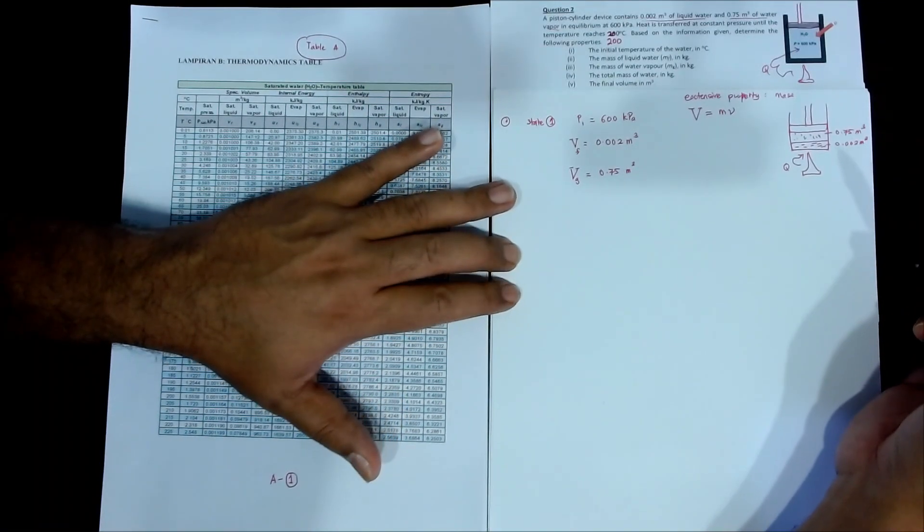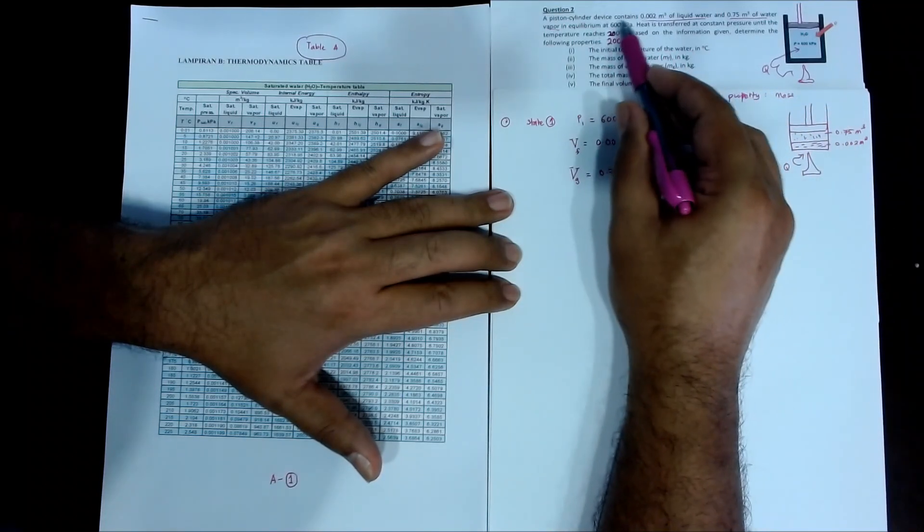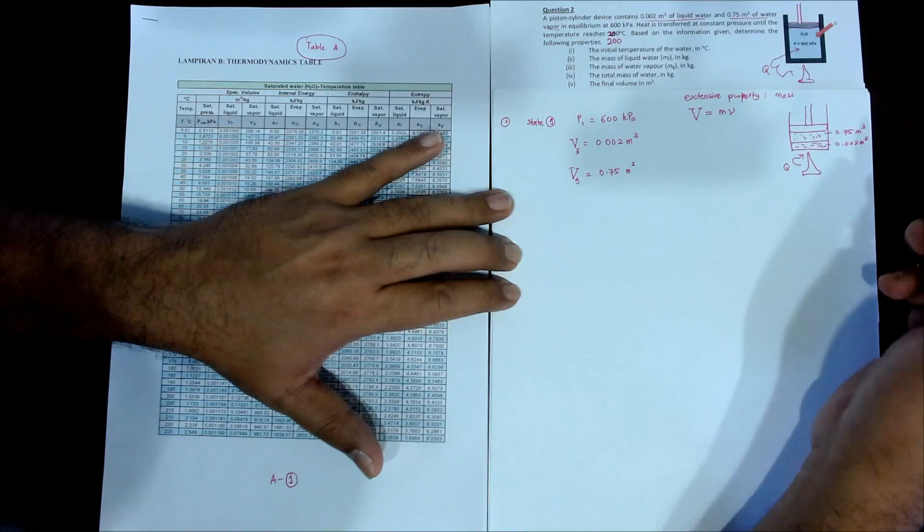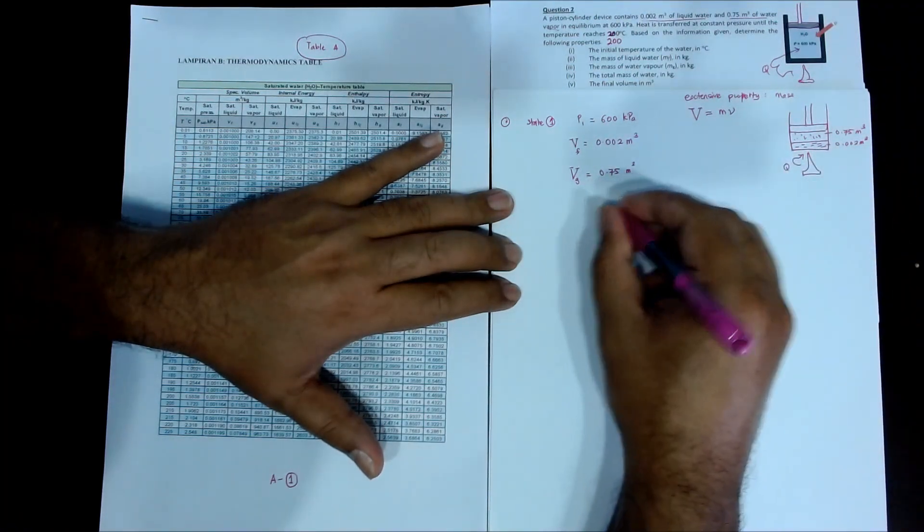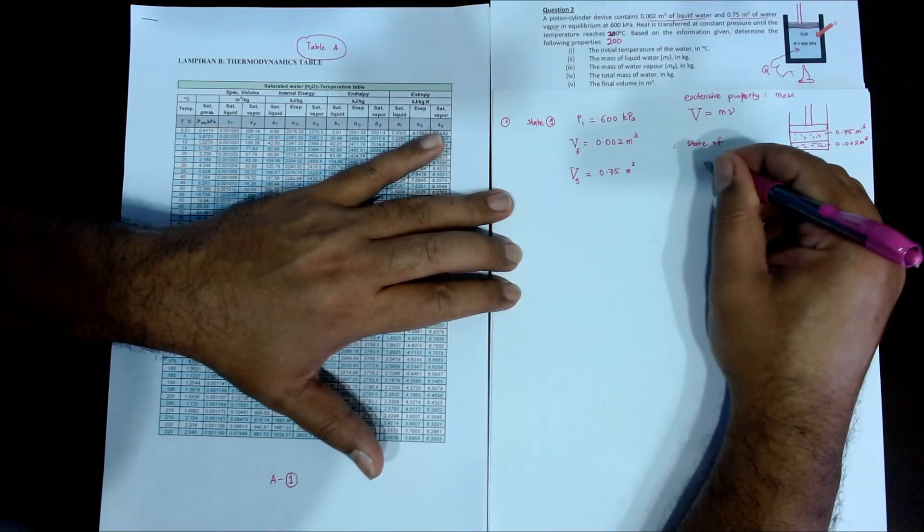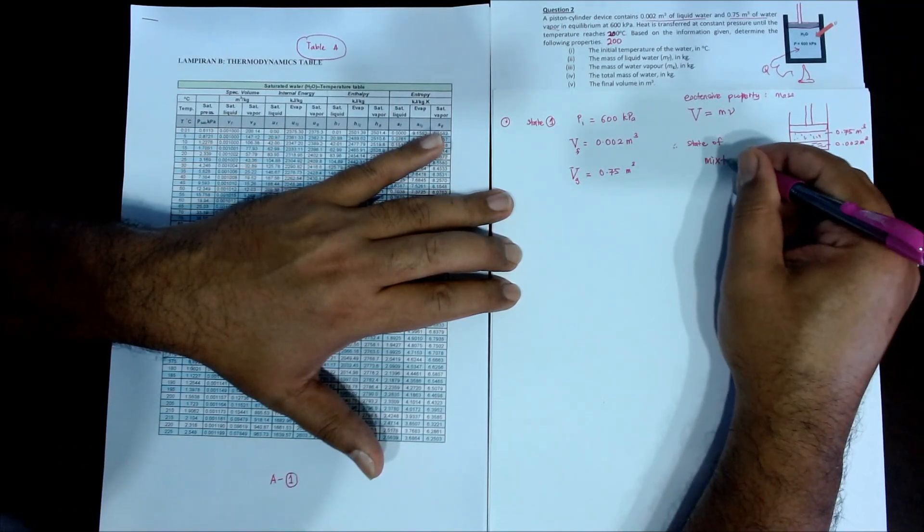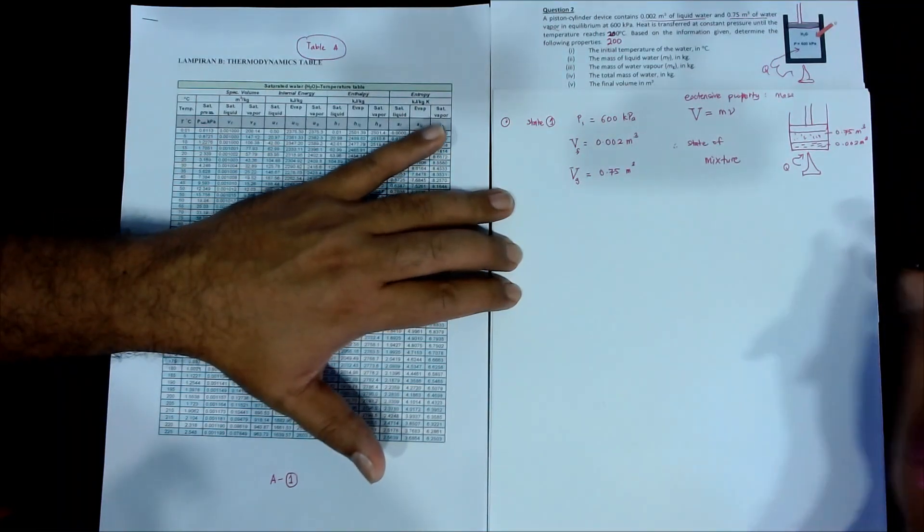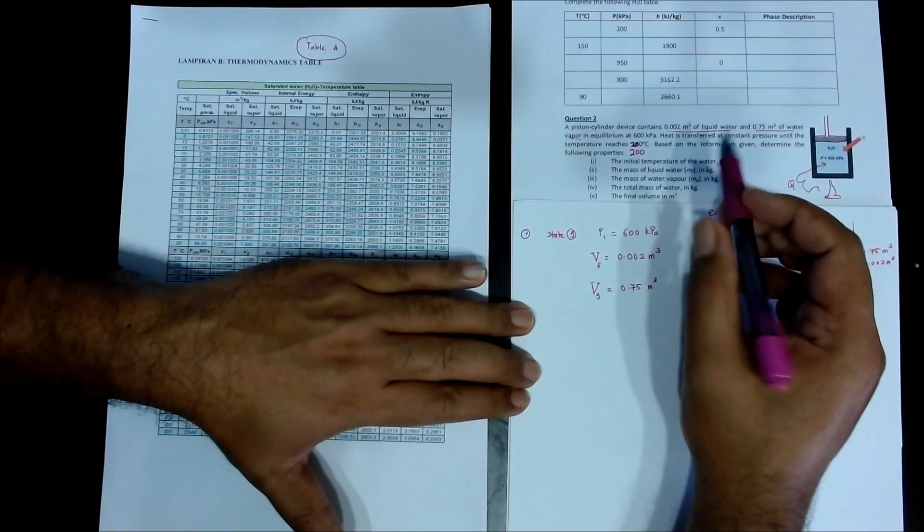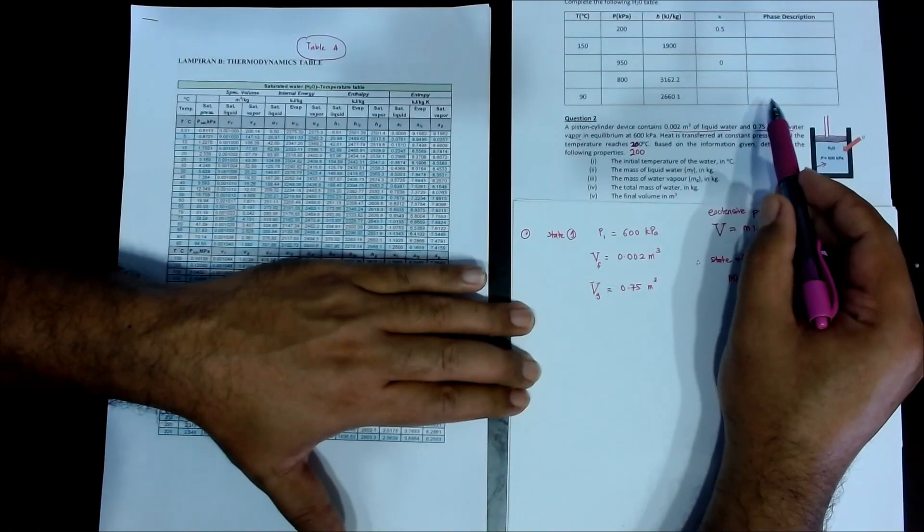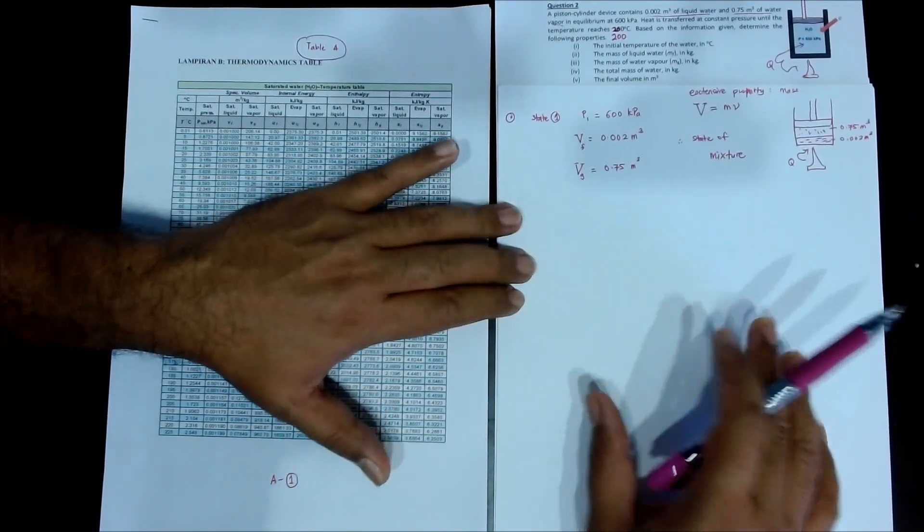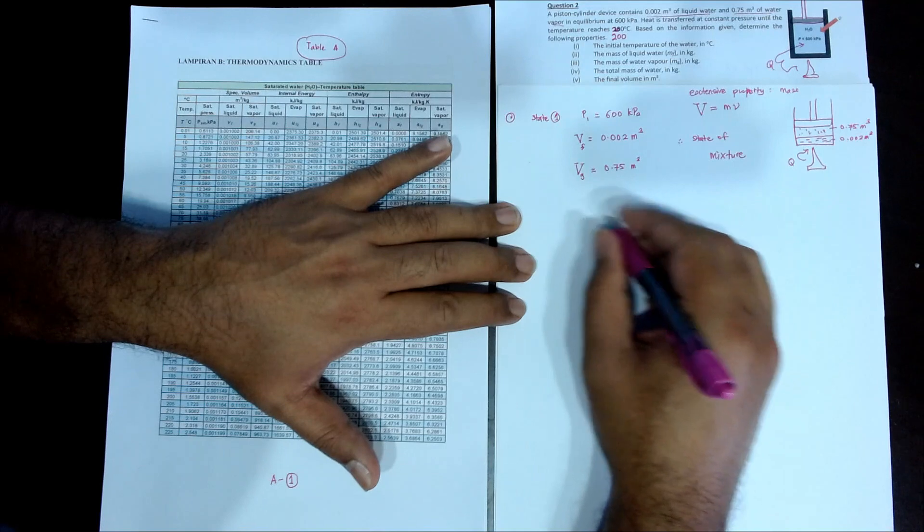Because contained this one and this one, liquid and vapor, automatically when on this is as state of mixture. Remember this table, it's a state of mixture. So, now if it is mixture, we can start solve the problem.